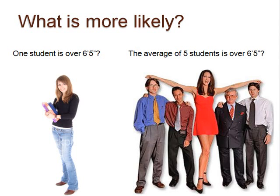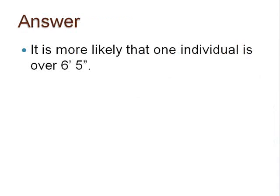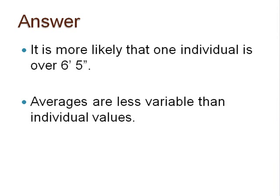For the mean of 5 students to be over 6 foot 5 inches tall, each individual in that sample would have to be quite tall. Therefore, it is more likely that one individual is 6 foot 5 than the average of 5 individuals. In general, averages are less variable than individual values, and we know the sampling distribution is a distribution of averages, or sample means.